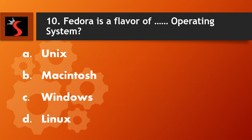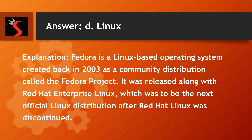The tenth question is: Fedora is a flavor of which operating system? A. Unix. B. Macintosh. C. Windows. Or D. Linux. The right answer is Linux. Explanation: Fedora is a Linux-based operating system created back in 2003 as a community distribution called the Fedora Project. It was released along with Red Hat Enterprise Linux, which was to be the next official Linux distribution after Red Hat Linux was discontinued.